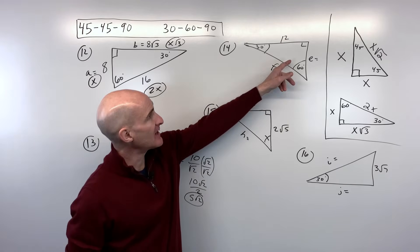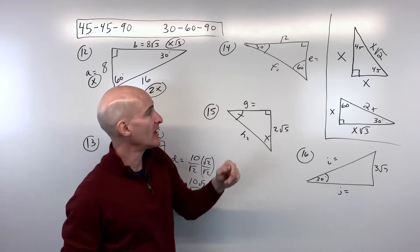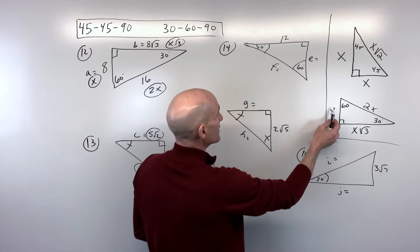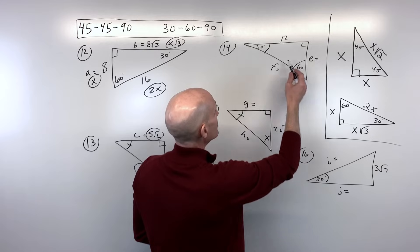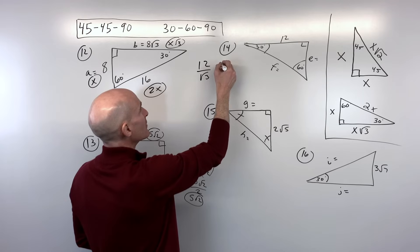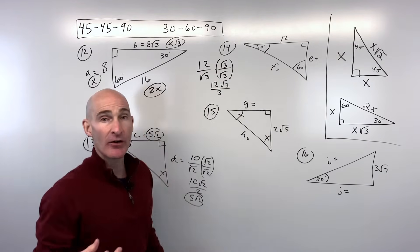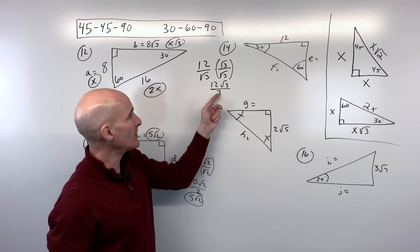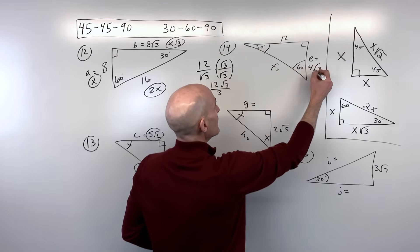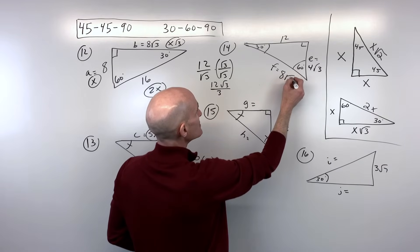For number 14, another 30-60-90. They're giving us the side across from the 60-degree angle — the longer leg, the x√3 side. To get back to the short leg, divide by √3: 12 divided by √3. Rationalize: 12√3 over 3. The 12 and 3 reduce to give 4√3 for the short leg. To get the hypotenuse, double it: 4√3 times 2 is 8√3.